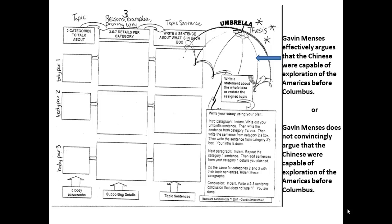A couple possibilities for a thesis. If you agree with him, the first one could work: Gavin Menzies effectively argues that the Chinese were capable of exploration of the Americas before Columbus. If you don't believe it, then the second option would be better for you: Gavin Menzies does not convincingly argue that the Chinese were capable of exploration of the Americas before Columbus.